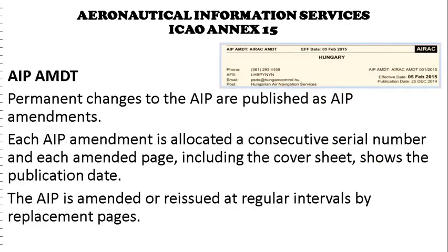AIP Amendments are permanent changes to the AIP published as AIP amendments. Each AIP amendment is allocated a consecutive serial number, and each amended page including the cover sheet shows the publication date. The AIP is amended or reissued at regular intervals by replacement pages.